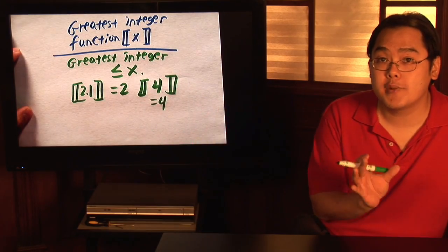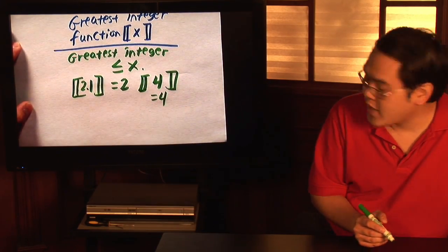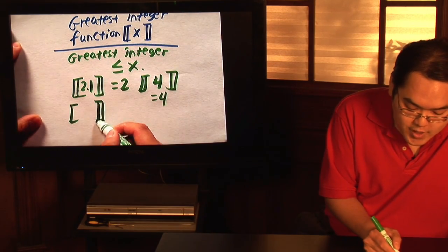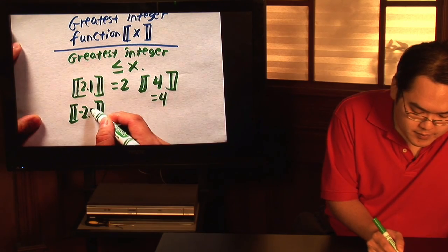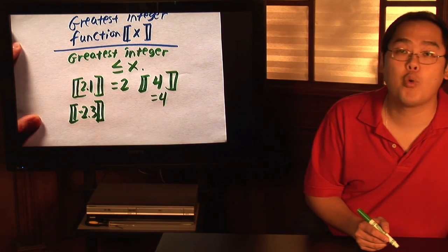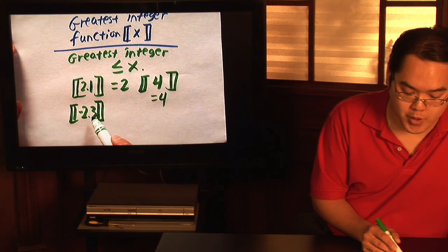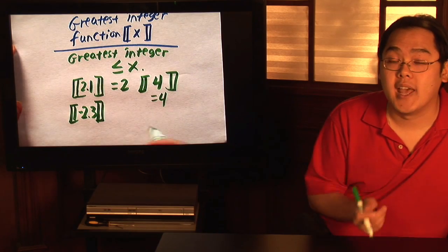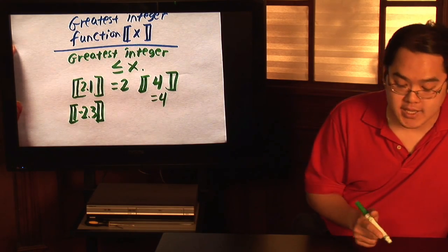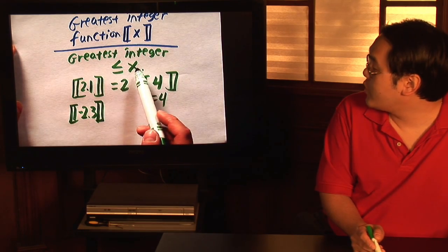The only thing that's a little bit tricky is if you have negative numbers. Let's suppose you have the greatest integer of negative 2.3. You want to think about the greatest integer less than or equal to negative 2.3. You might think it's going to be negative 2, but the definition is you're looking for the greatest integer less than or equal to x.